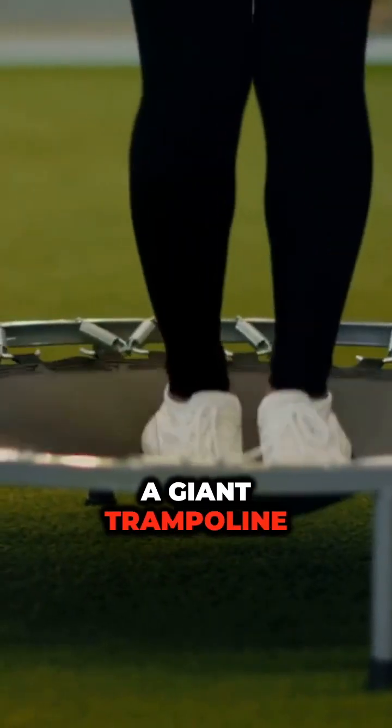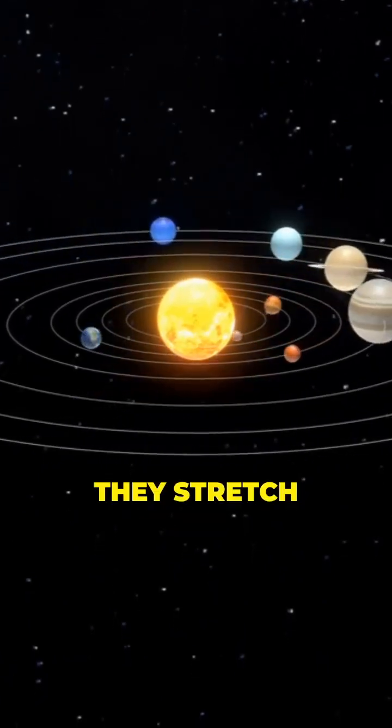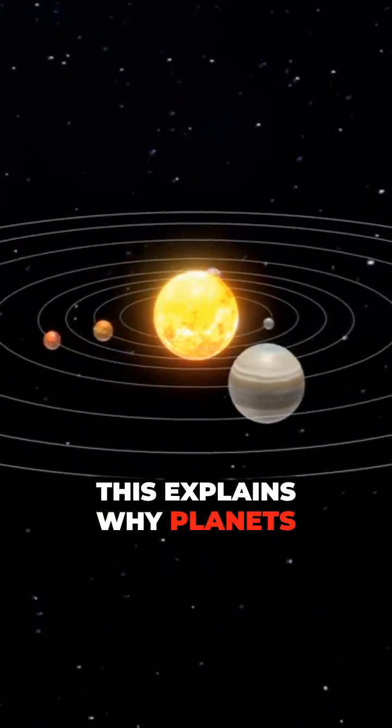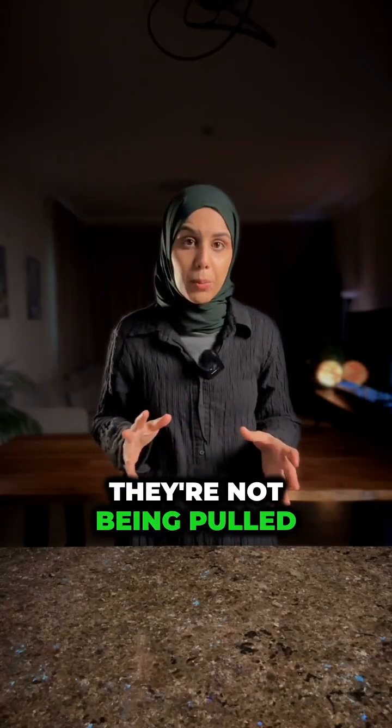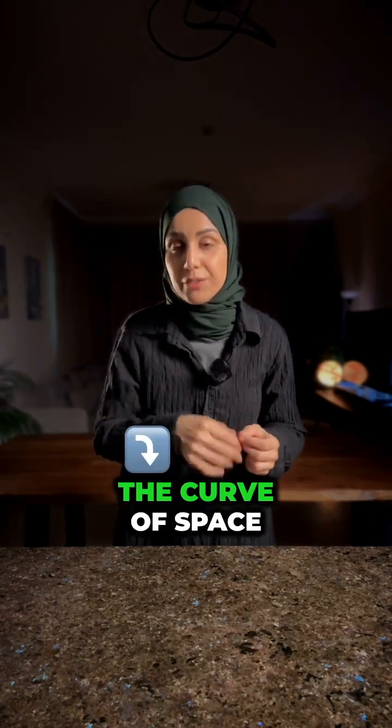Think of space like a giant trampoline and the objects like stars and planets, they stretch and bend it. This explains why planets orbit stars. They're not being pulled by an invisible force. They're just following the curve of space.